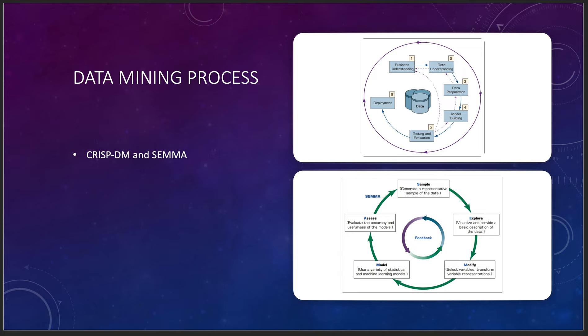There are two data mining processes you should know: CRISP-DM and SEMMA. The book has two good graphics on these. For CRISP-DM: business understanding, data understanding, data preparation, model building, testing and evaluation, and deployment. You want to understand your data, clean it, make sure it's ready, build your models, test and evaluate them. SEMMA — Sample, Explore, Modify, Model, and Assess — follows a similar process but includes a feedback loop ensuring all steps loop back to maintain accuracy.